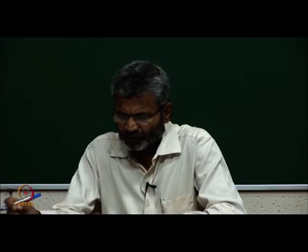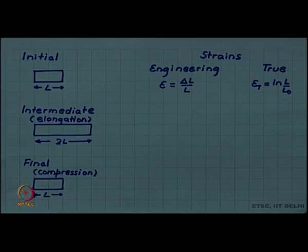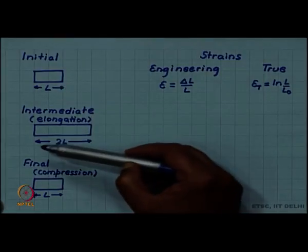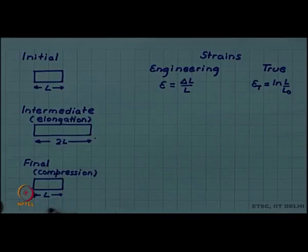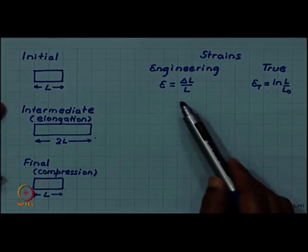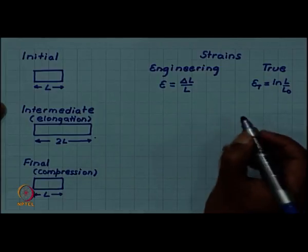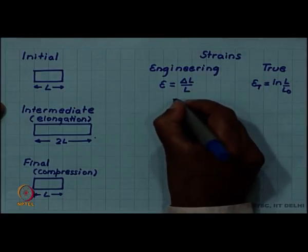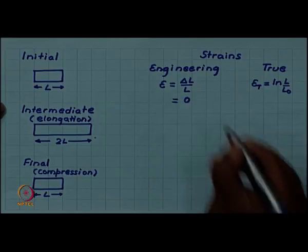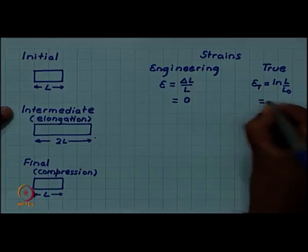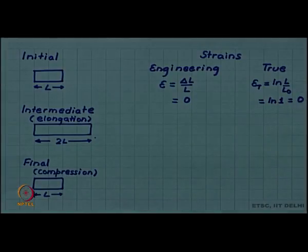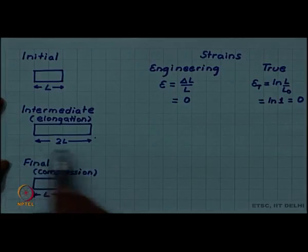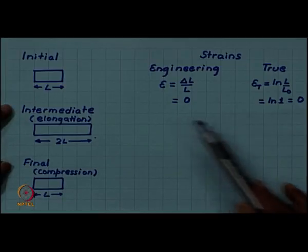Let us compare engineering strain and true strain for an example situation. It is an extreme situation where I start with an initial length and elongate it to twice its original length. So we go from L to 2L, and then finally compress it back to L, and let us see how this is described by engineering strain and true strain. Initially there is no change in length, so delta L is 0, engineering strain is 0, and log of 1 also gives 0. So we start with 0 engineering strain and 0 true strain. But the intermediate stage of elongation up to a length of 2L is described differently by each.